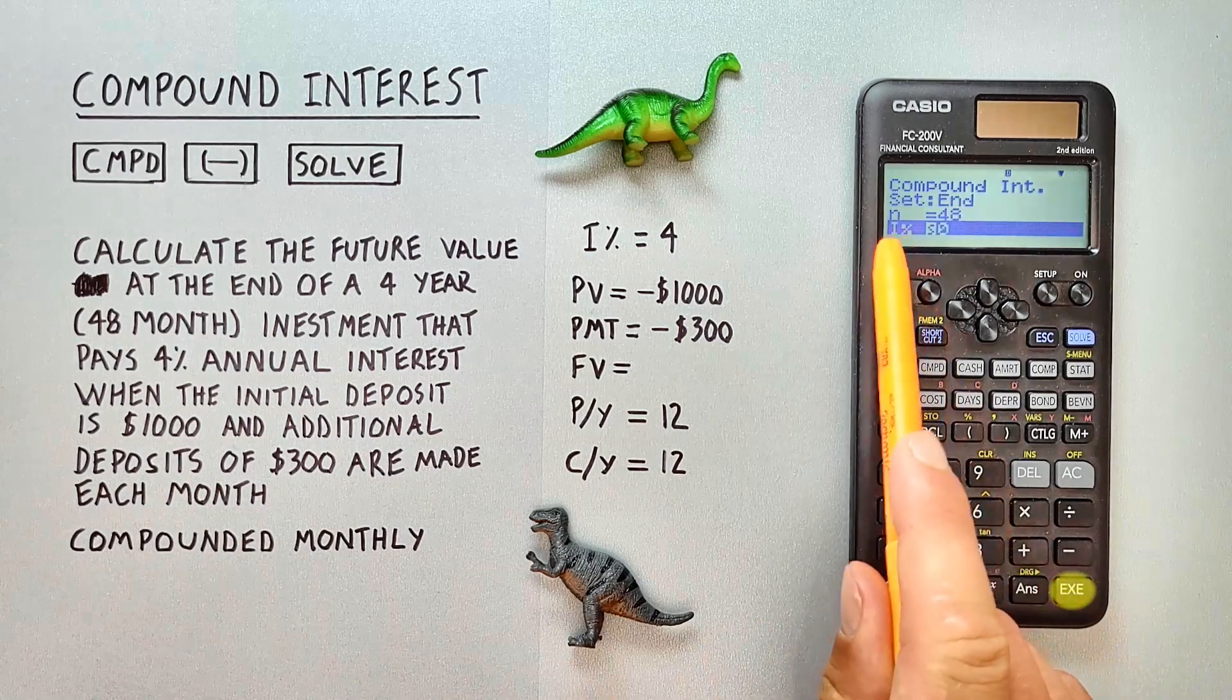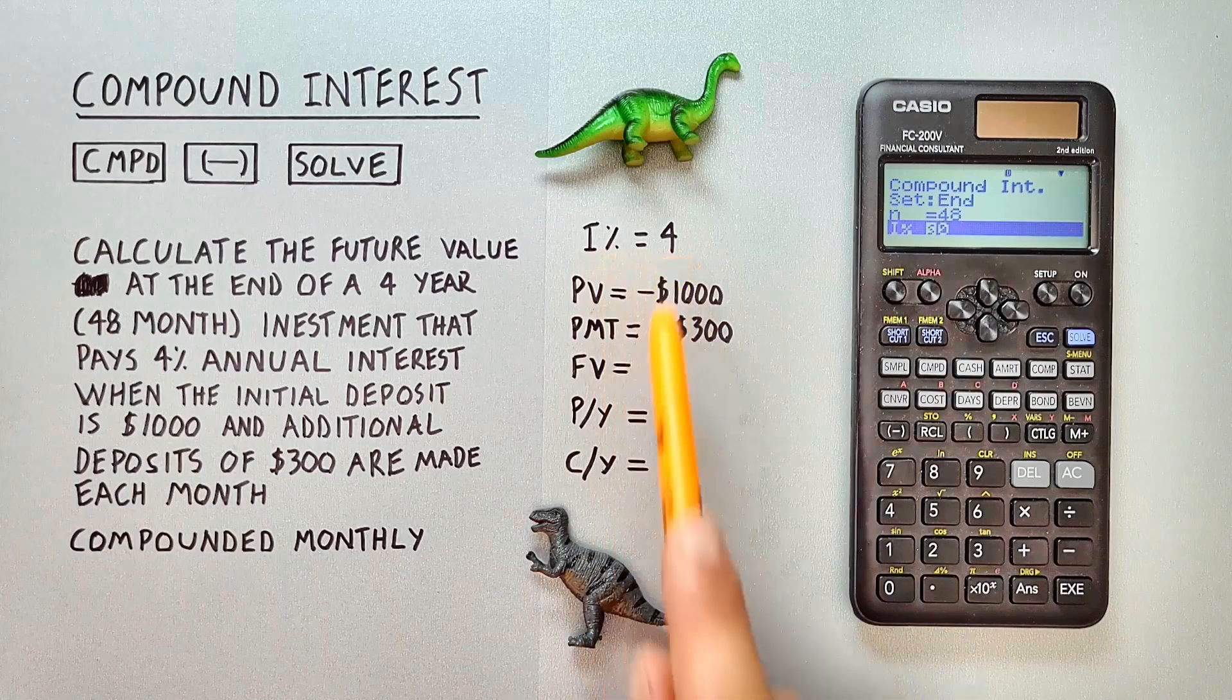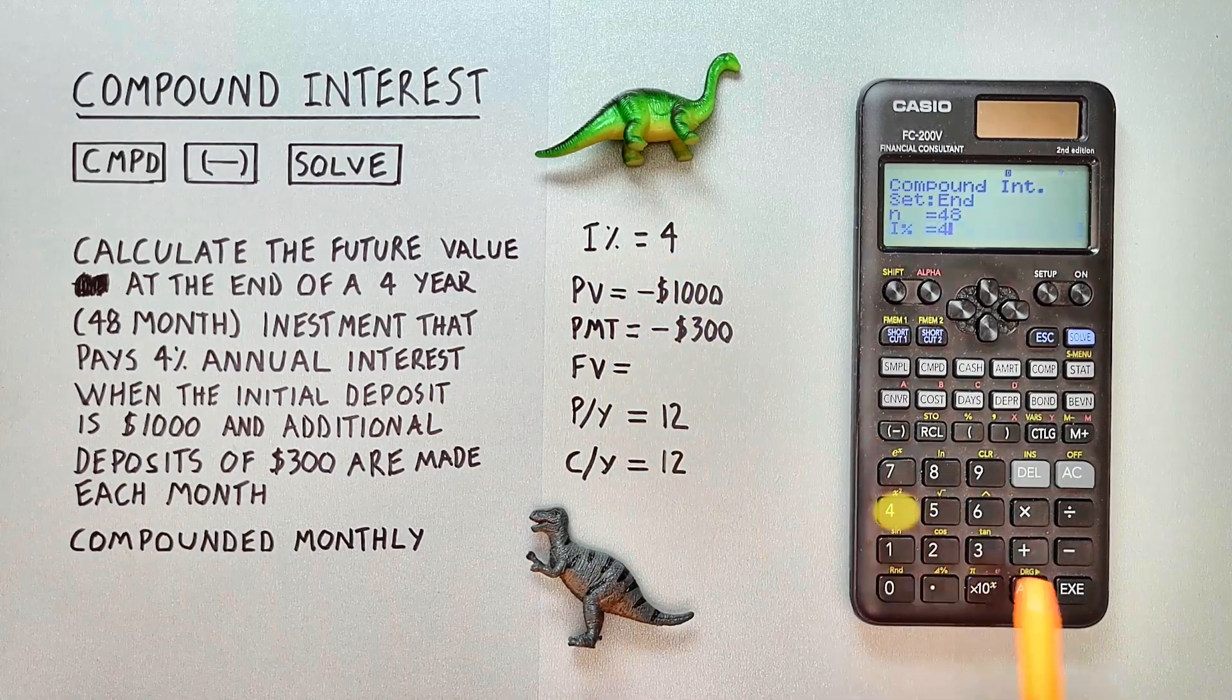And then we have I for interest. That was 4%. So we just press 4, EXE.